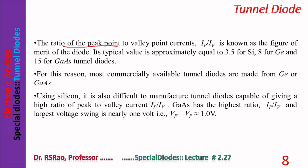The ratio of peak point current to valley point current — Ip/Iv — is considered a figure of merit for the diode. Its typical value is 3.5 for silicon, 8 for germanium, and 15 for gallium arsenide. As per this figure of merit, gallium arsenide is the best when compared to either germanium or silicon.